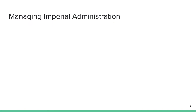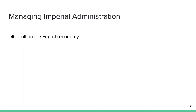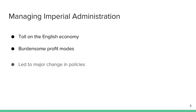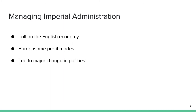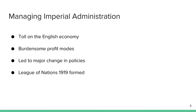As the 19th century passed on, the cost of managing the imperial administration started to make an impact on the colonizers' attitude. What was initially a very beneficial enterprise and a mode of profit was now becoming burdensome. A deliberate shift in policy can be seen in the formation of the League of Nations in 1919, when the creation of the mandate system made the image changeover necessary.